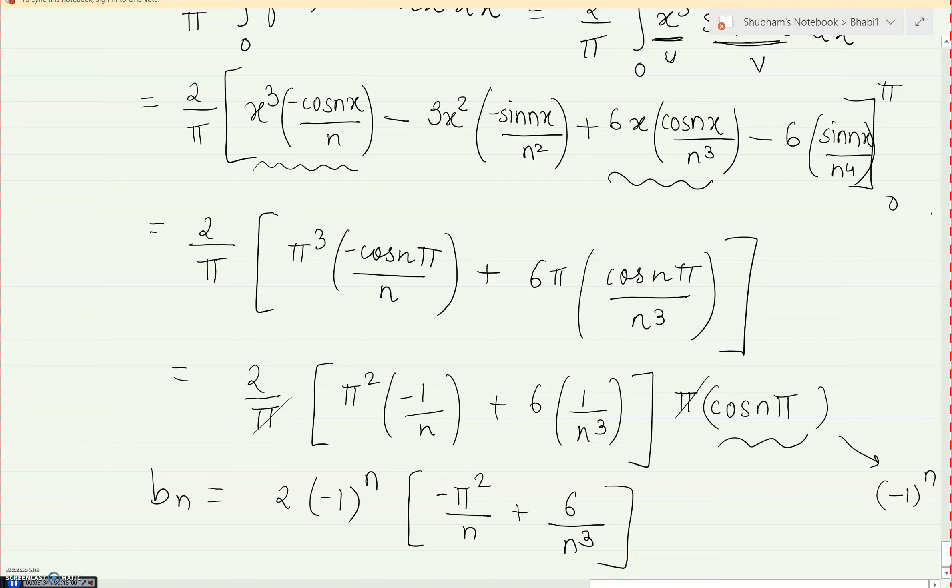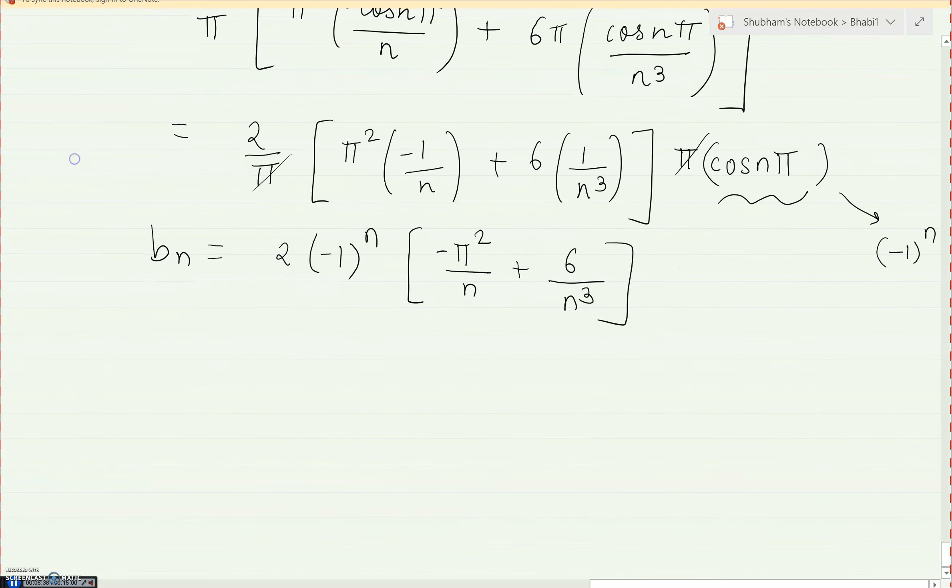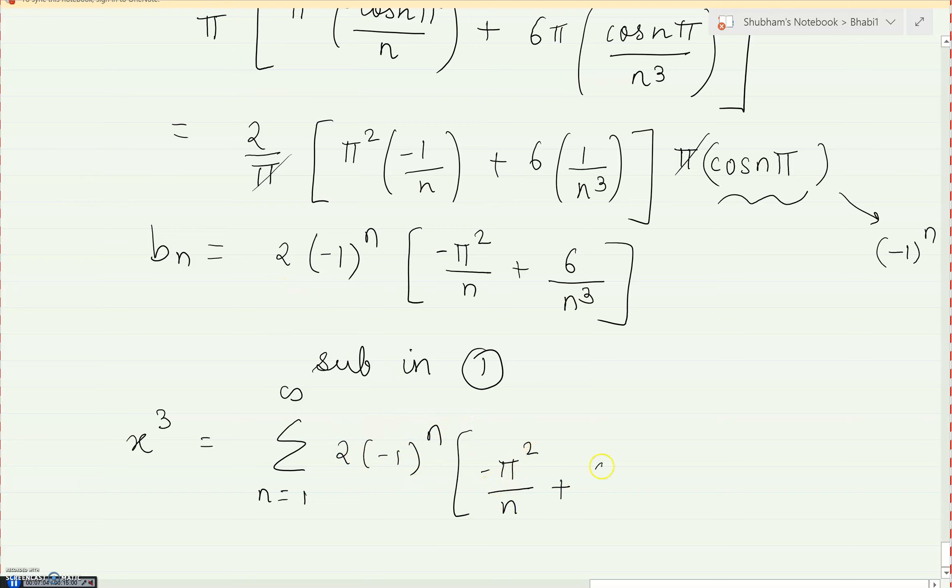And now you will substitute this in equation number 1 to get the final Fourier series. So my final Fourier series, so substituting in 1, I will get the final Fourier series. So that is x cube equals summation n 1 goes to infinity, whatever answer I have got: 2 into minus 1 raised to n, and this minus pi square upon n plus 6 upon n cube, and sin n x. The range is minus pi less than x less than pi. So this is my final answer. So this sum reduces to half of the sum of the original sum, so the sum is easier and usually you should attempt these types of questions.